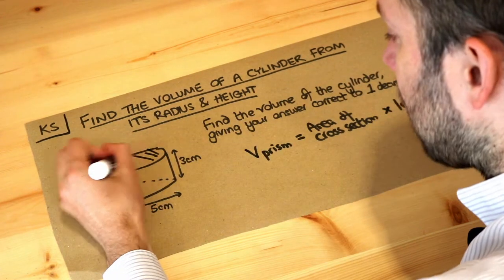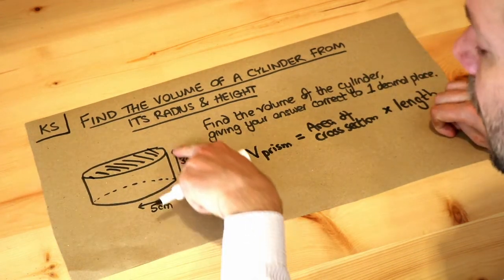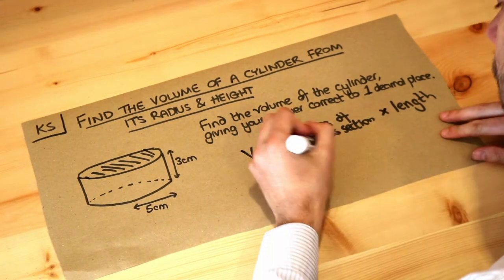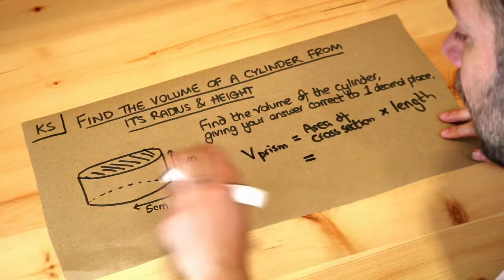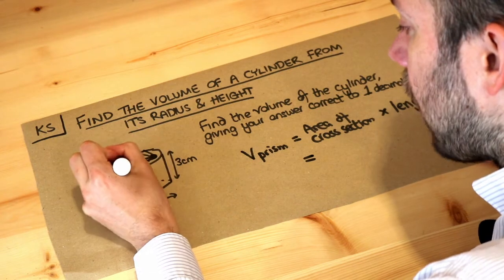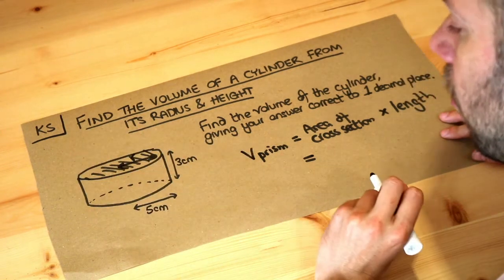So this is our cross section here, and that's the length of our prism. So let's think for this, if the radius of our cylinder is, let's say, r, r for radius,